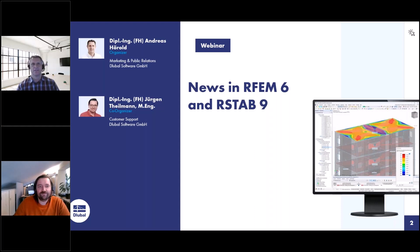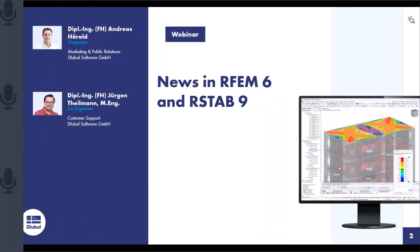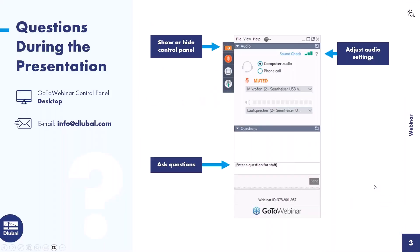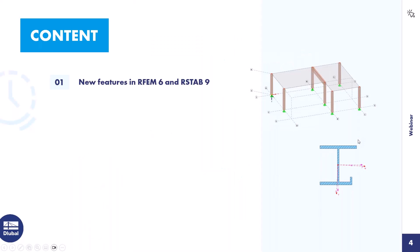I've been working for the company DLUBAL Software for 13 years. You can see a control panel on the right side of your screen — you can show that with the arrow and enter your question there. You will get an answer from Jürgen. If you don't get an answer because there are too many, you will get an email in the next days. The other way is to email your questions to info@dlubal.com.